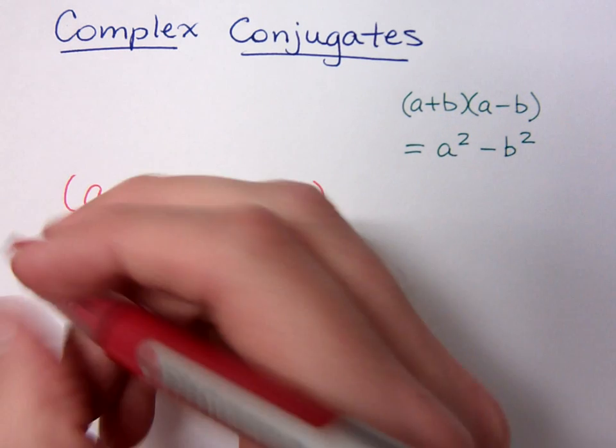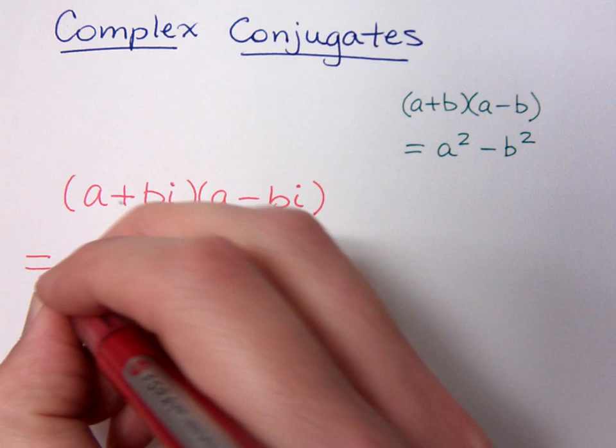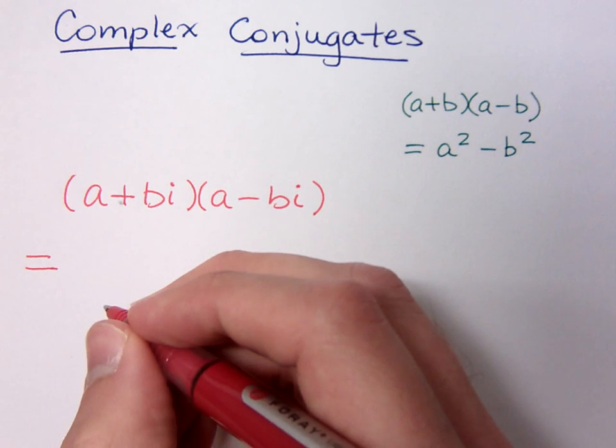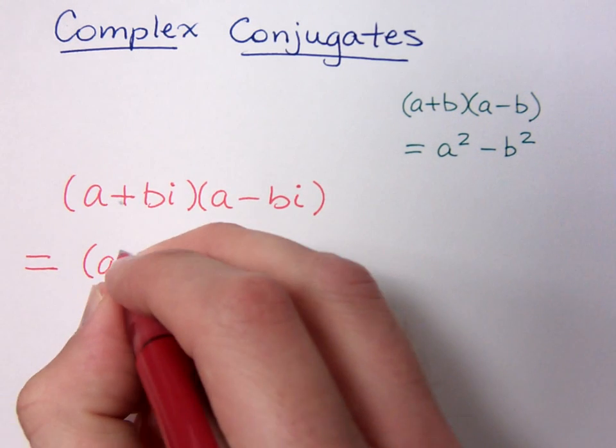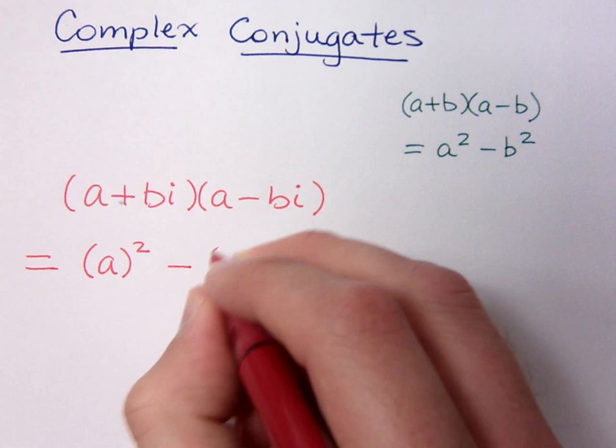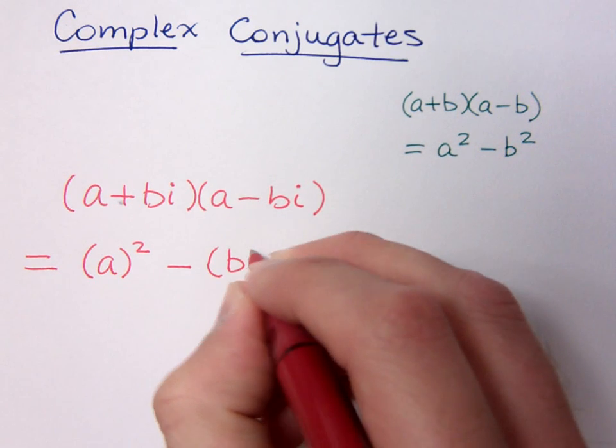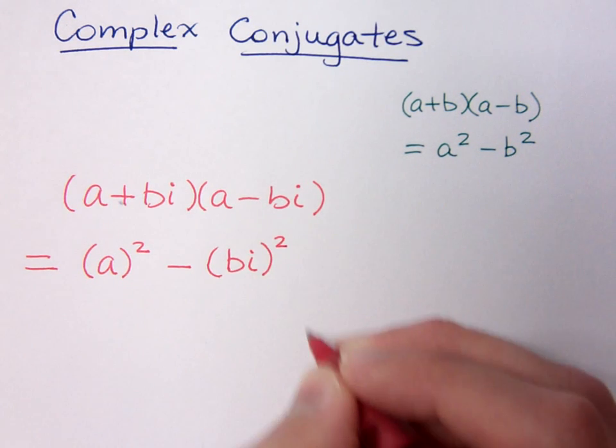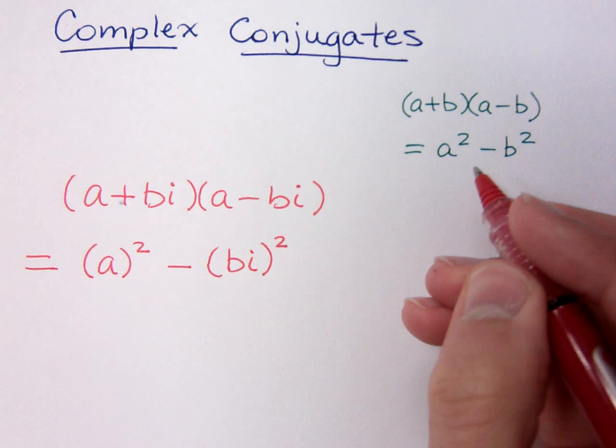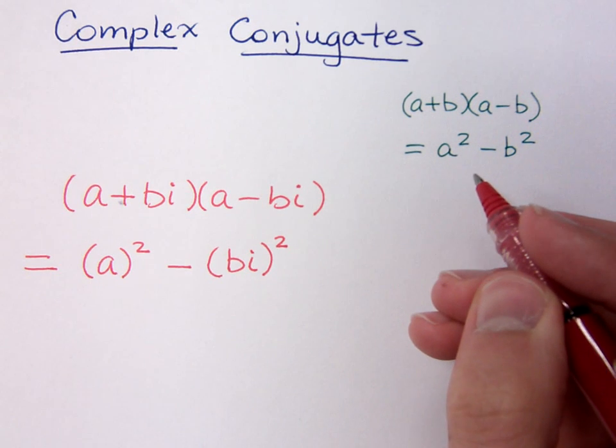Now, when we start multiplying these guys, we know that we can use this special product for the difference of squares. So that would give you a squared minus bi squared. That's a direct application of the aforementioned difference of squares formula.